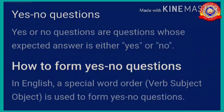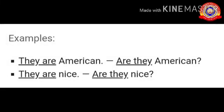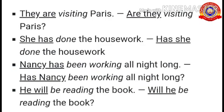Yes or no questions are questions whose expected answer is either yes or no. In English, a special word order is used to form yes/no questions. For example: 'They are Americans' becomes 'Are they Americans?' 'They are nice' becomes 'Are they nice?' 'They are visiting Paris' becomes 'Are they visiting Paris?'